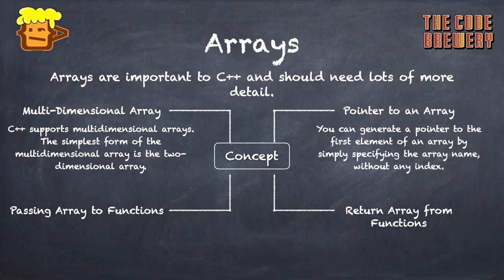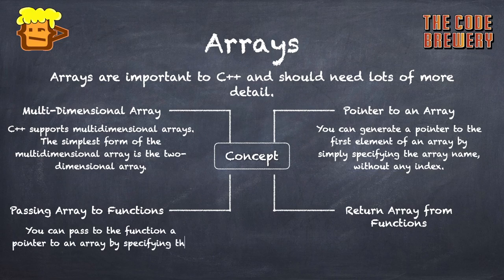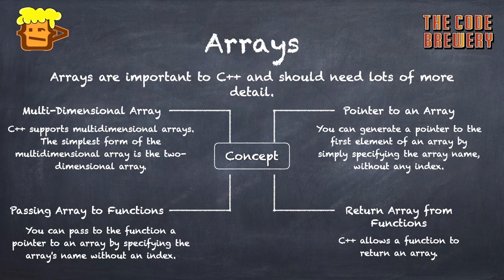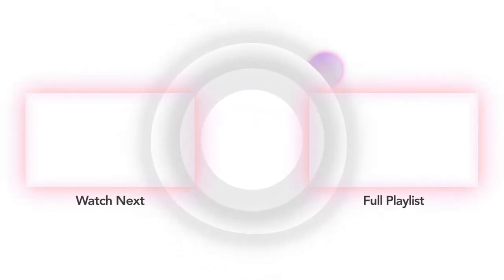For a pointer to an array, you can generate a pointer to the first element by simply specifying the array name without any index — we'll also cover this in the pointers section. For passing an array to a function, you pass a pointer to the array by specifying the array name without an index. C++ also allows a function to return an array. These are more advanced topics and will be covered in future videos.